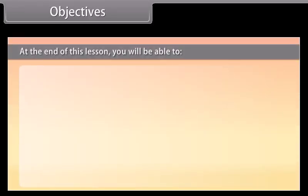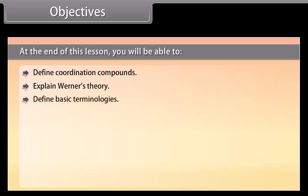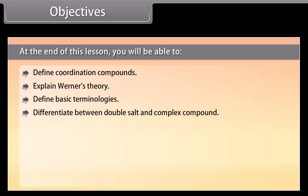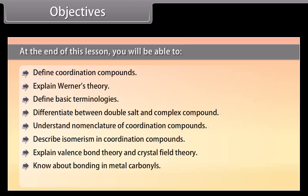At the end of this lesson, you will be able to: define coordination compounds, explain Werner's theory, define basic terminologies, differentiate between double salt and complex compound, understand nomenclature of coordination compounds, describe isomerism in coordination compounds, explain valence bond theory and crystal field theory, know about bonding in metal carbonyls, and analyze stability of coordination compounds.